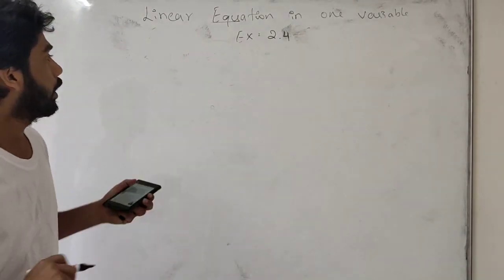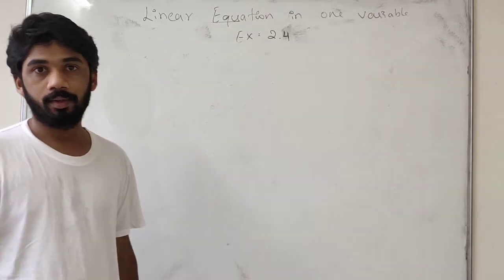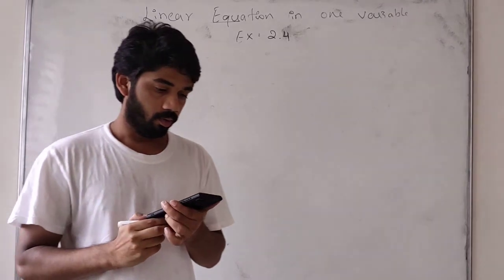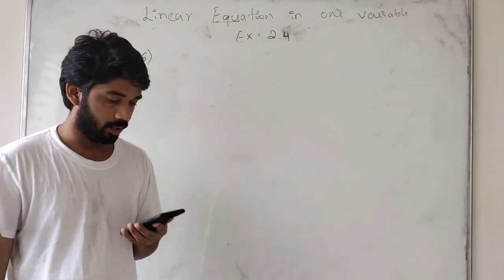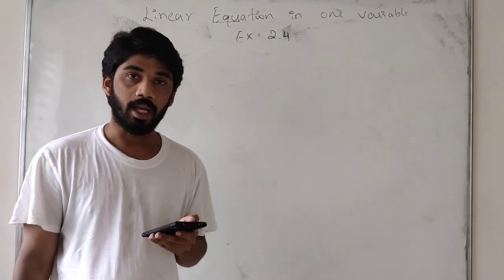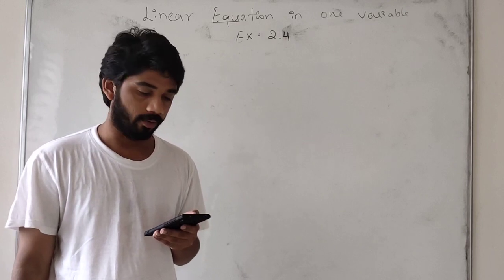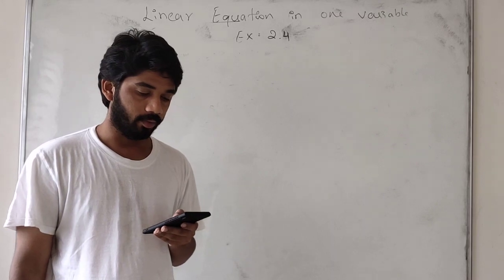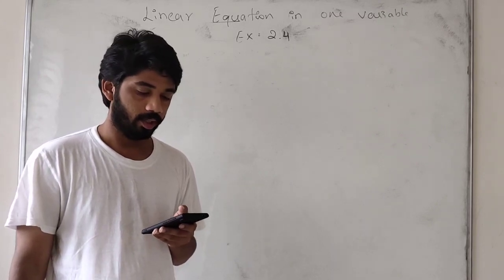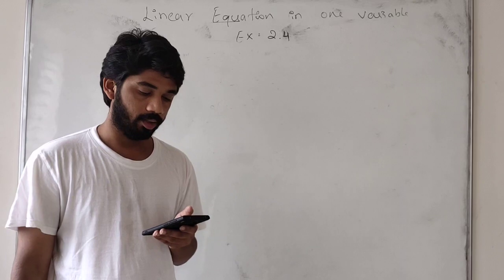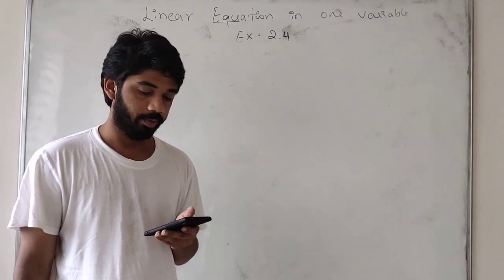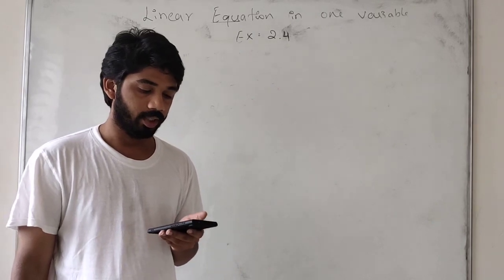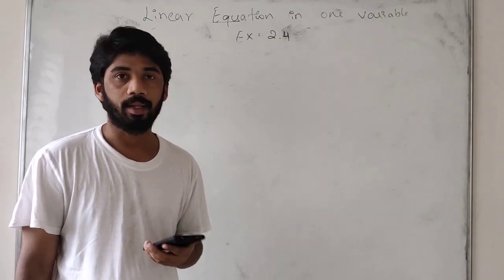Students, in the previous class we were doing exercise 2.4. Today's class, I will do the 6th problem. What does the problem say? There is a narrow rectangular plot reserved for a school in Mahuli village. The length and breadth of the plot are in the ratio of 11 is to 4. At the rate of 100 rupees per meter, it will cost the village panchayat 75,000 to fence. What are the dimensions of the plot? We have to find length and breadth.